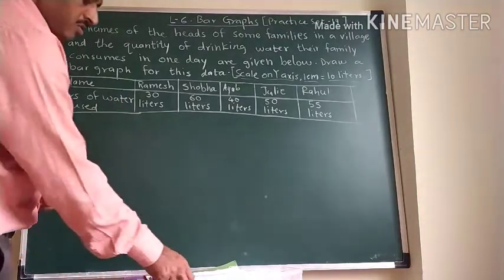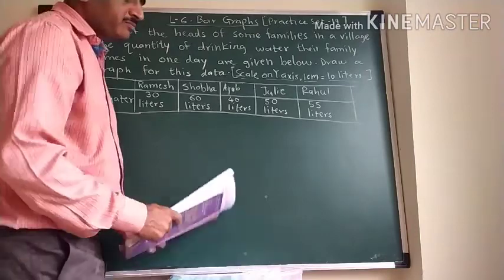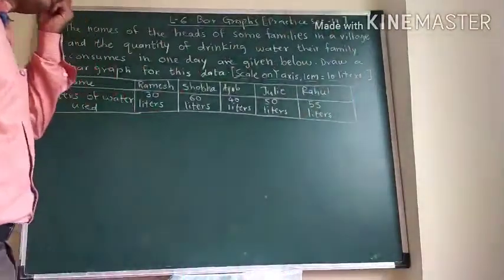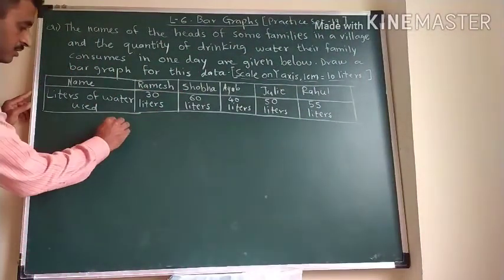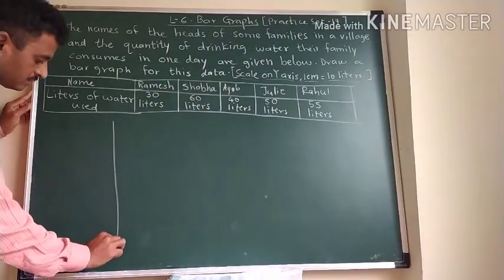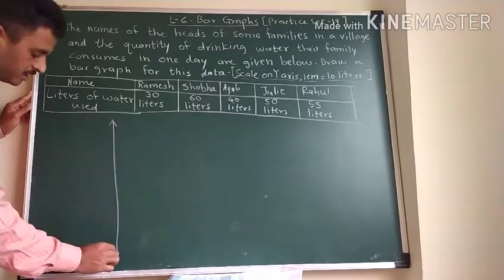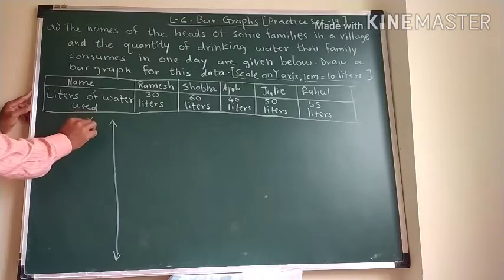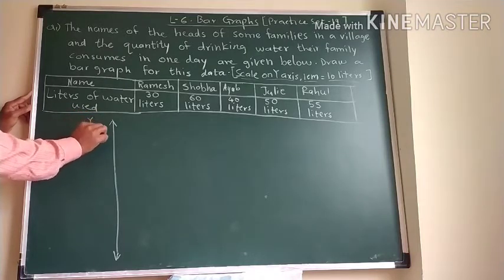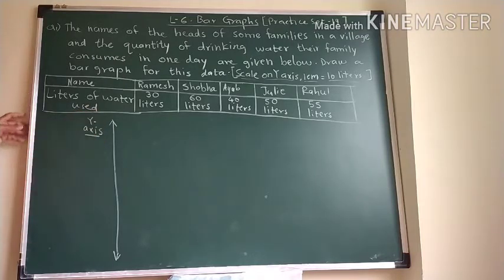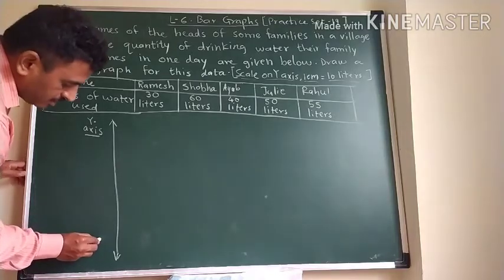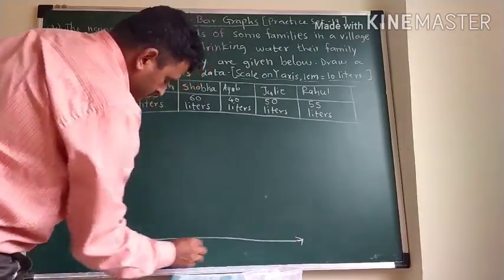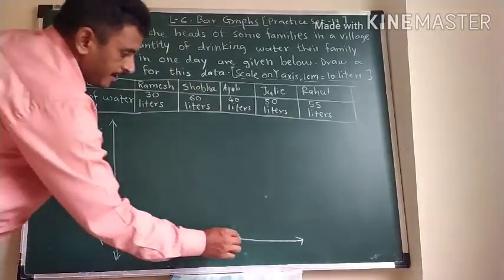Now we can draw a bar graph. For that first we have to draw Y axis, the standing vertical line is called as a Y axis. And the horizontal line is called as X axis.